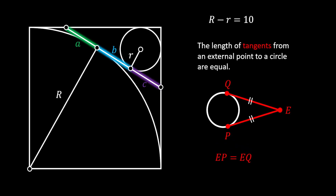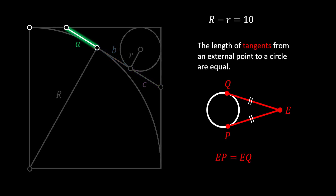We are going to use this property for our sketch. First let's notice this red circular arc — it has an external point and points of tangency, which I will label as E, P, and Q. Since EP must be equal to EQ, this means that EQ must also have the length of A plus B.